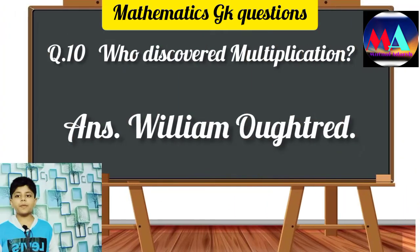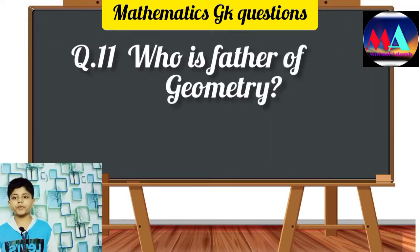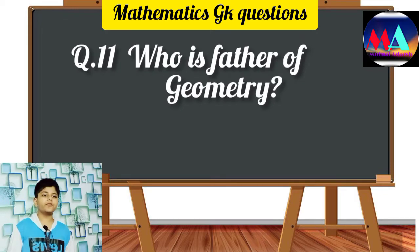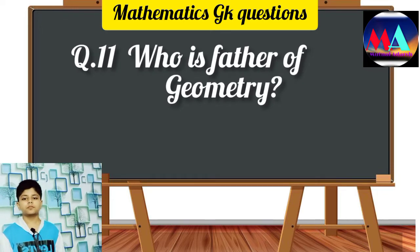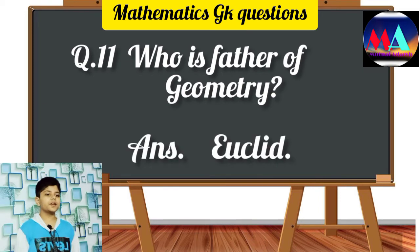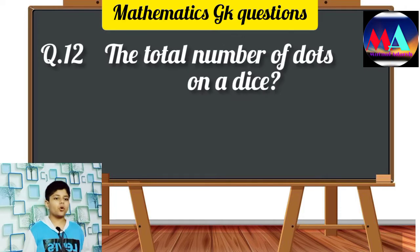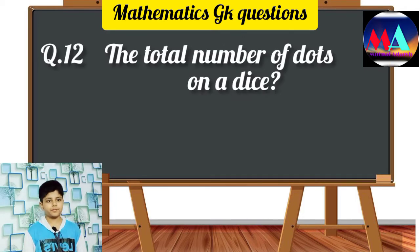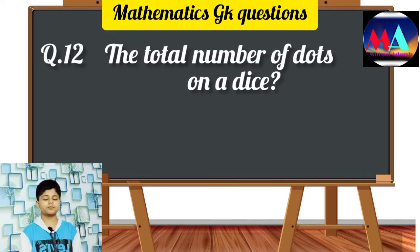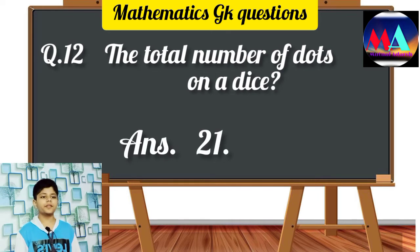Question number 11: Who is the father of geometry? Answer: Euclid. Question number 12: What is the total number of dots on a dice? Answer: 21.